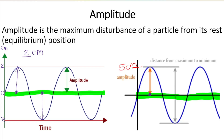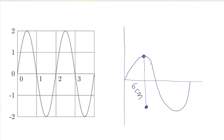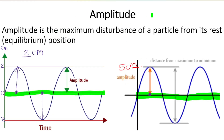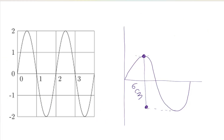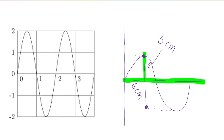There's one way they can throw you off. They might give you a diagram showing the vertical distance from the crest down to the trough — for example, six centimeters. But remember, amplitude is the distance from the equilibrium position up to the crest, or down to the trough. So if the full crest-to-trough distance is six centimeters, the amplitude is only three centimeters — half of that. Be careful with what information the diagram is giving you.